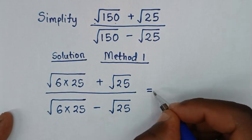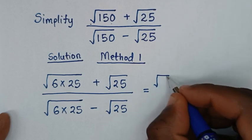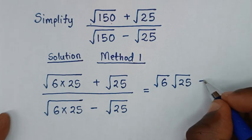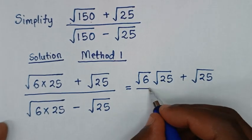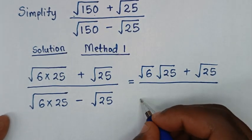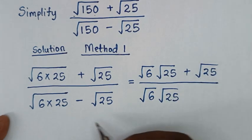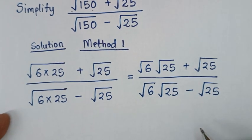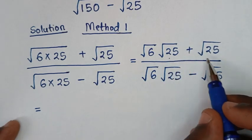Then it will be equal to: square root of 6 times 25 — we separate — so it will be square root of 6 times square root of 25. Then over, in the denominator, we separate square root of 6 times 25 as square root of 6 times square root of 25, then minus square root of 25. In the next step, in the numerator, square root of 25 is common.